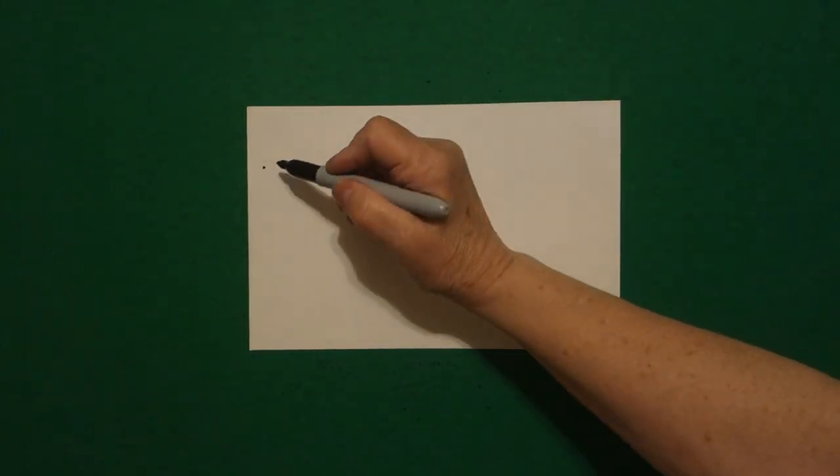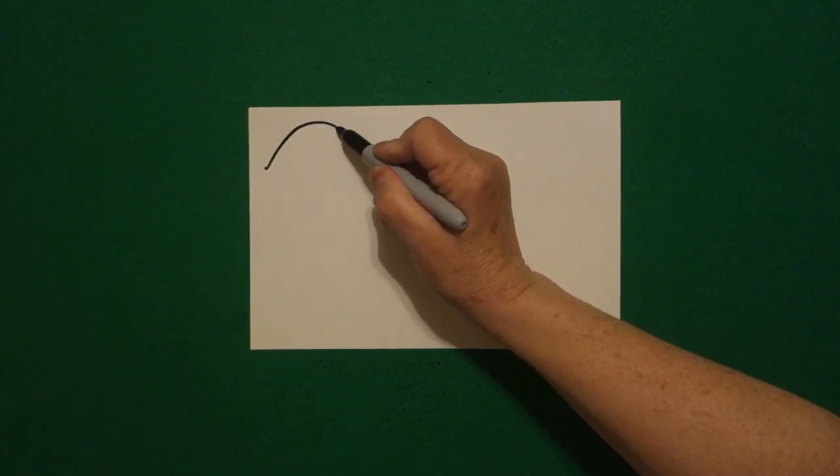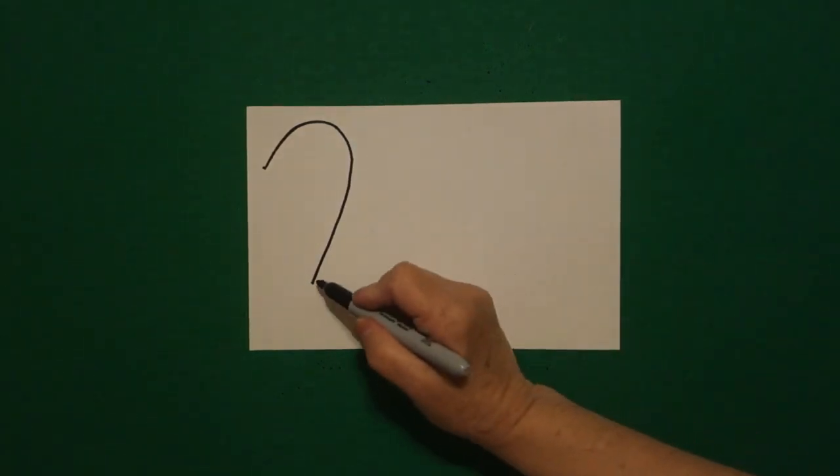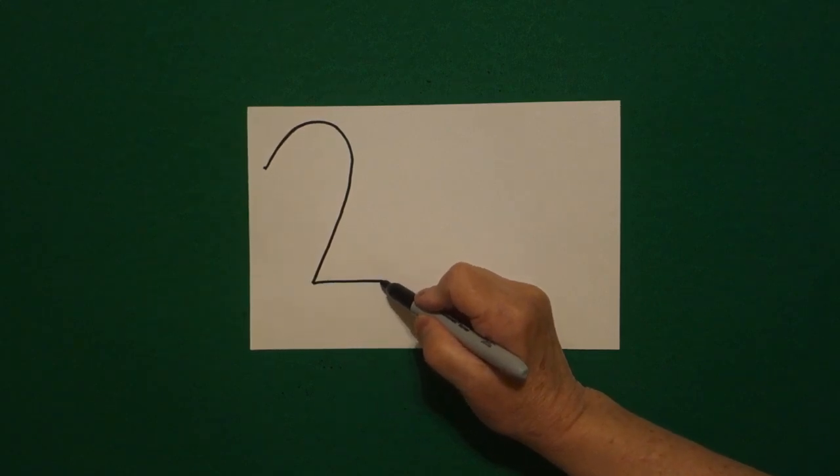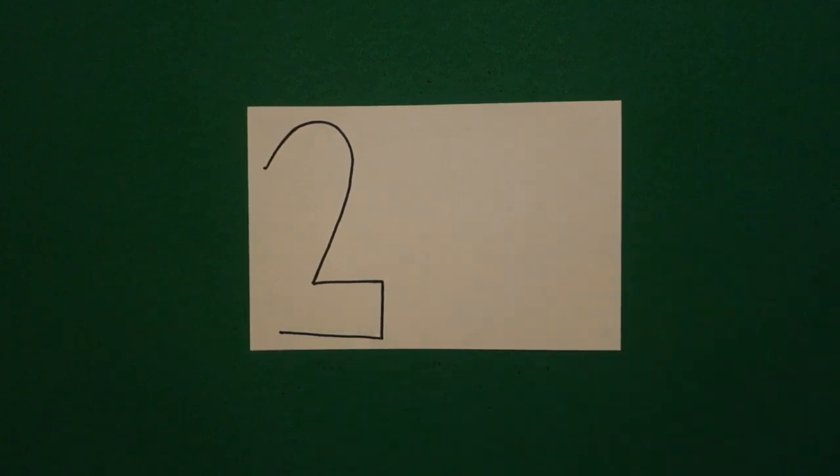And from that dot, I'm going to draw a curved line up, over, and down to about there and stop. I draw a straight line out, straight line down, straight line over, and leave that floating.